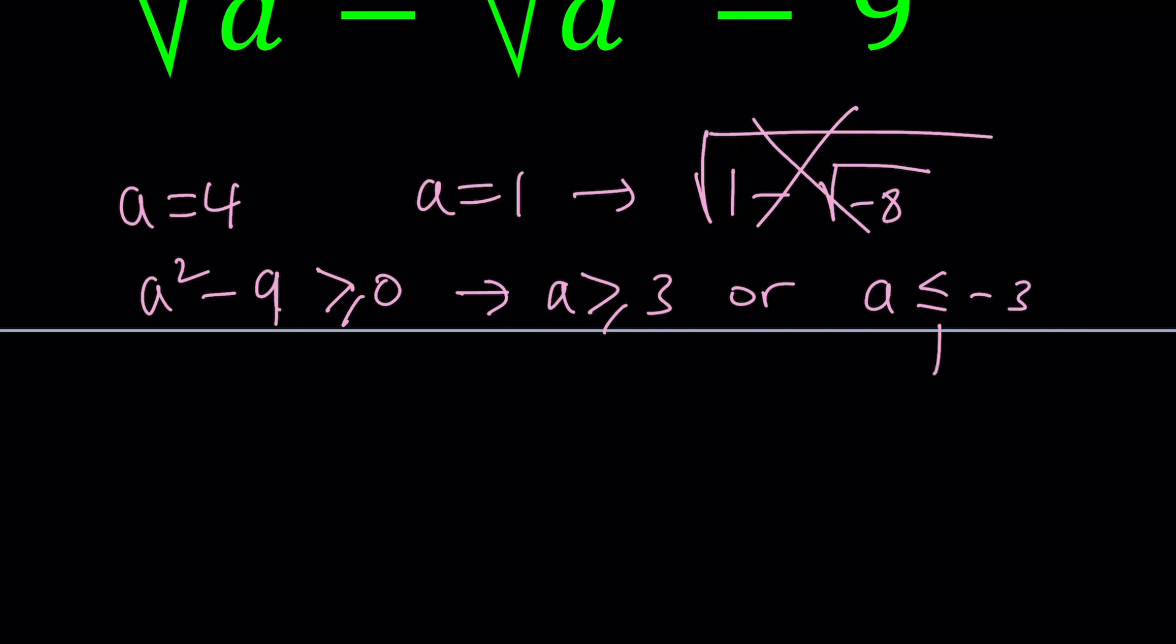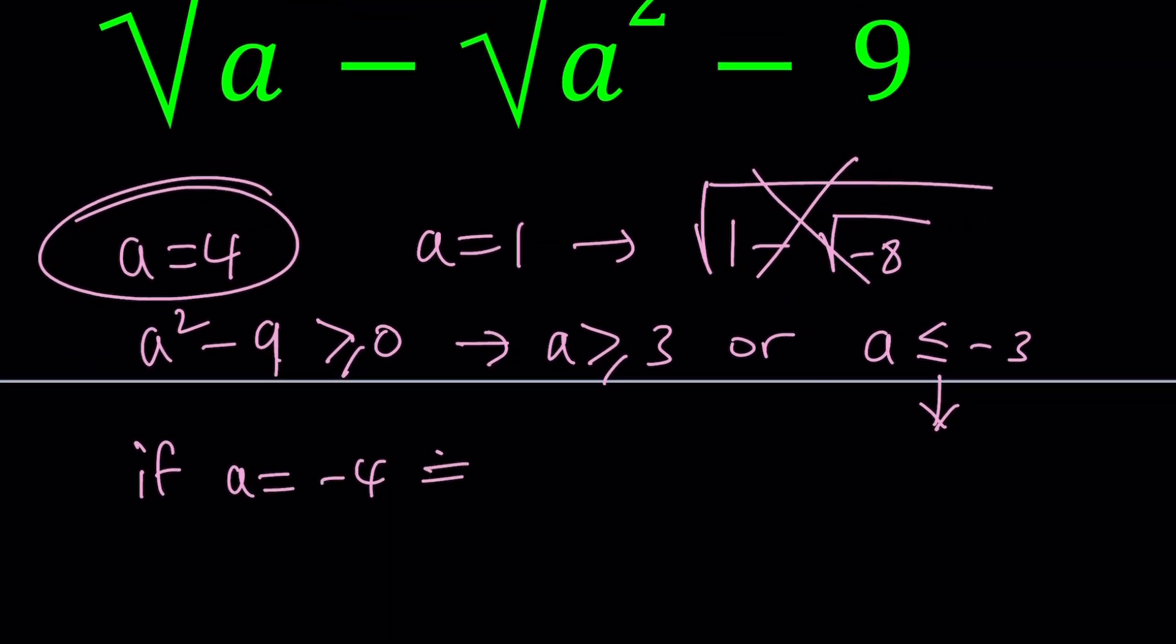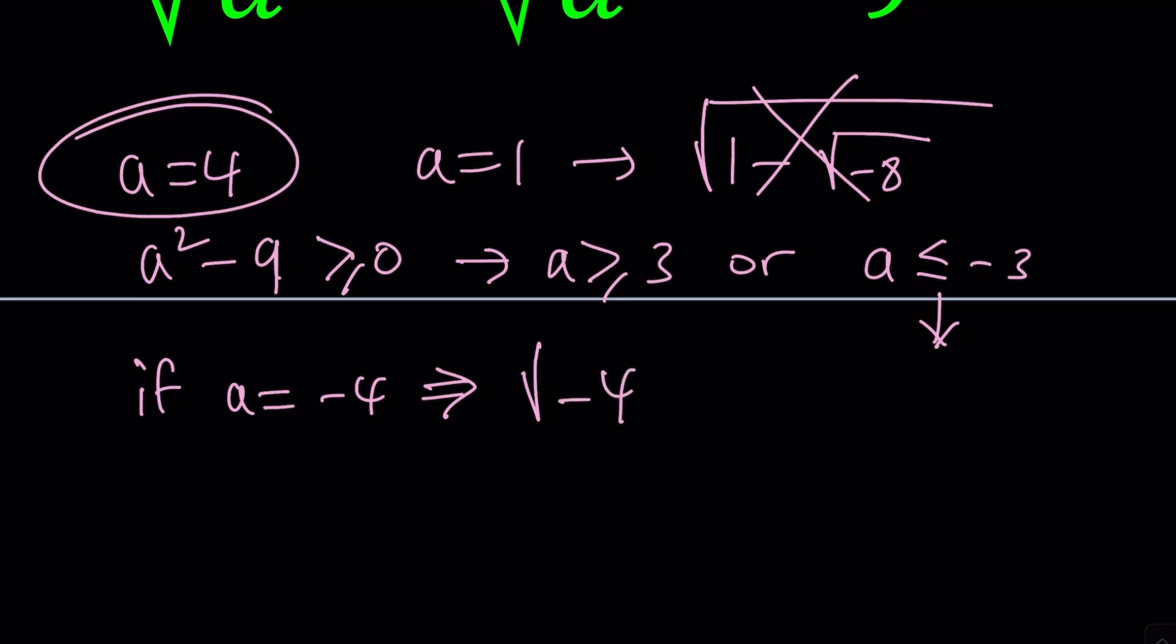Do you think anything less than negative three would work? For example, what happens if a is equal to negative four? If a is equal to negative four, negative four minus negative four squared is 16 minus nine is seven. This expression is less than zero. So this is not real either. So we're kind of getting into trouble with these values. Let's go ahead and stick to a being greater than or equal to three, which brings us back to a equals four.